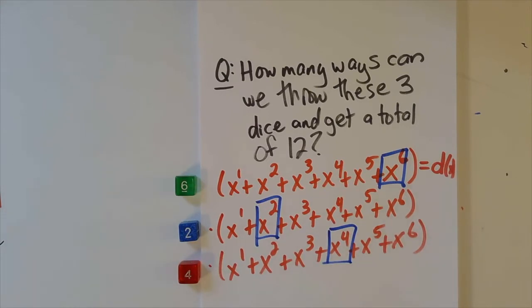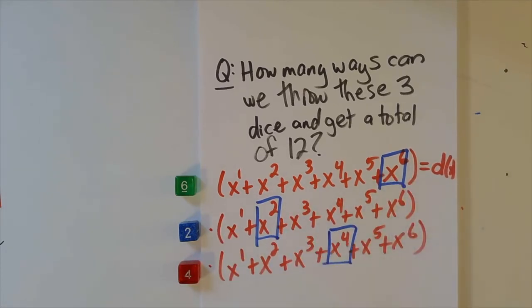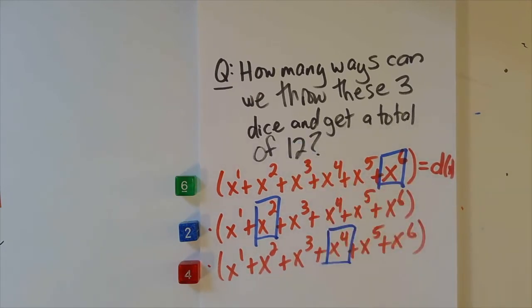And now what I want to note for you is that if you were to multiply out this horrendous polynomial, in fact, these three would correspond exactly to an x to the twelfth, right? Because I would add the six, the two, and the four.